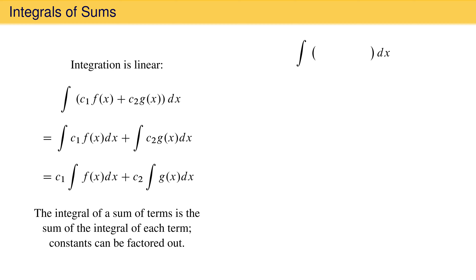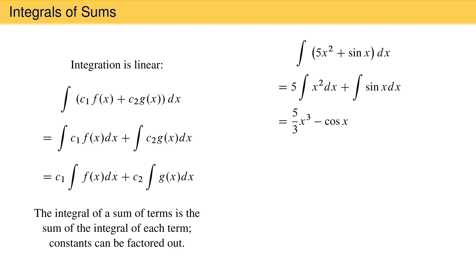For example, the integral of 5x squared plus sin x is not an integral we have seen, but we can break it into two integrals we have seen because integration is linear. This gives 5 times the integral of x squared dx plus the integral of sin x dx. Using rules we have already learned, we obtain 5/3 x cubed minus cos x plus a constant of integration. Even though each integral has a constant of integration, they can be combined into one constant.